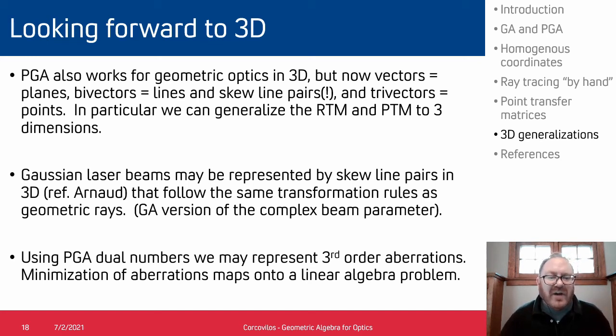We can also represent Gaussian laser beams using skew line pairs after a paper by Arnaud from the 1980s, and then we can follow the same transformation rules as geometric rays. And then lastly we can do more complicated things like keeping track of aberrations, so there's a lot of fertile ground to look at here.